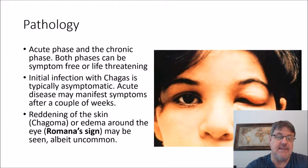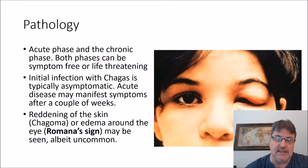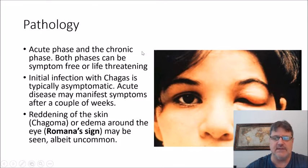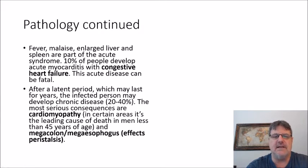Acute disease may manifest symptoms after a couple of weeks. Things you may see include a chagoma — that's a reddening of the skin — or edema around the eye, as seen in this picture. That's called Romaña's sign. Fever, malaise, enlarged liver, and spleen are also part of the acute syndrome.